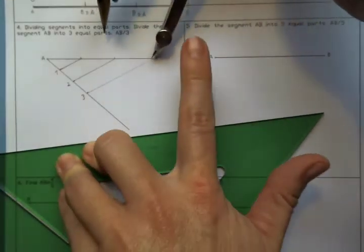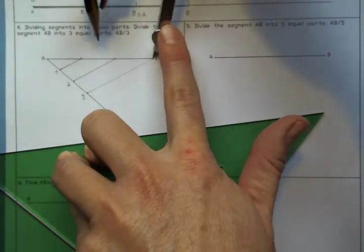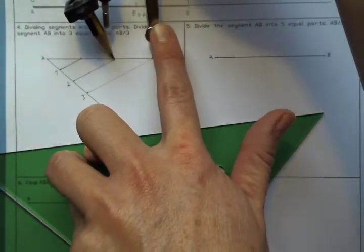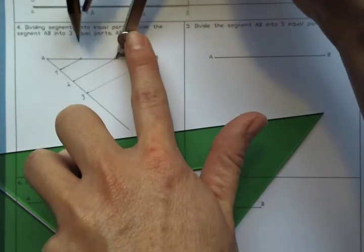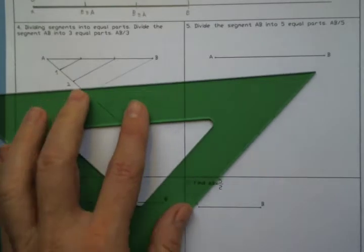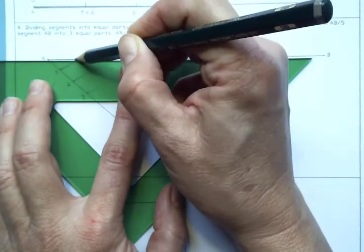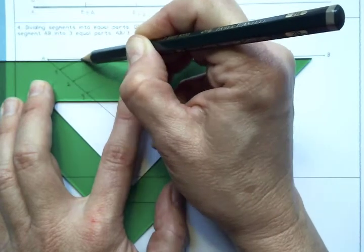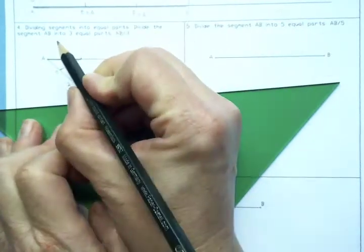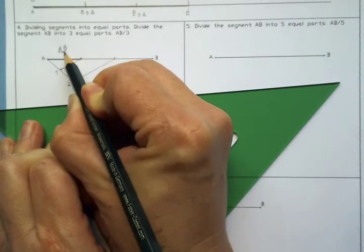I'm going to check it with the compass. One, two, one, three. We are going to highlight one of these. Okay. And this is AB into three.